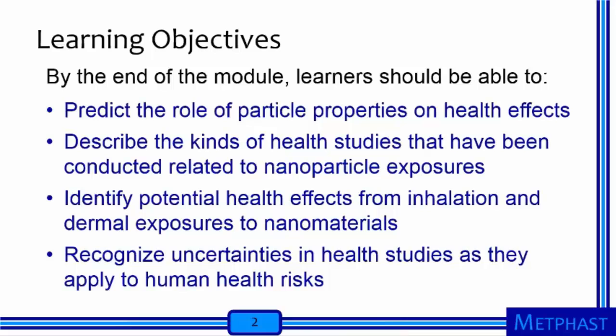By the end of this module, learners should be able to do the following: predict the role of particle properties on health effects; describe the kinds of health studies that have been conducted related to nanoparticle exposures; identify potential health effects from inhalation and dermal exposures to nanomaterials; and recognize uncertainties in health studies as they apply to human health risks.